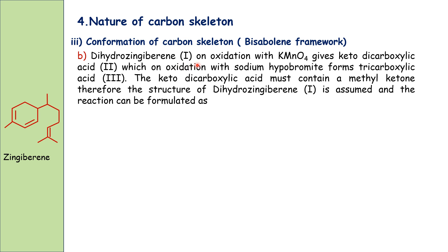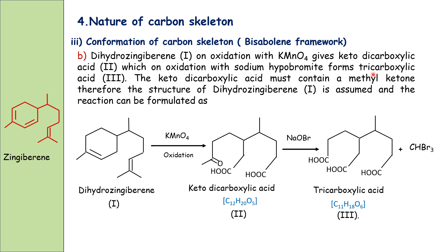Dihydrogingivirine, upon oxidation with KMnO4, gives a ketodicarboxylic acid, which upon further oxidation with sodium hypobromide forms a tricarboxylic acid. The ketodicarboxylic acid must contain a methyl ketone group. Dihydrogingivirine is obtained from gingivirine via reduction with sodium in ethanol through a 1,4-addition reaction.